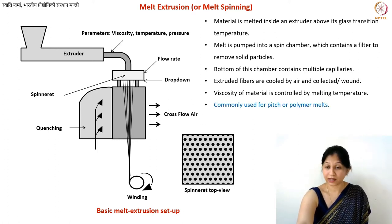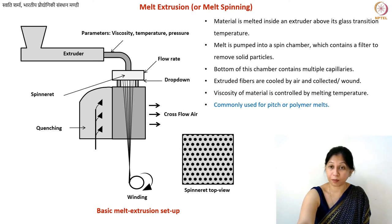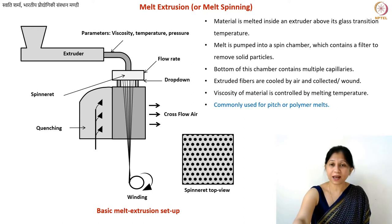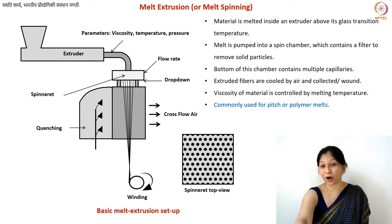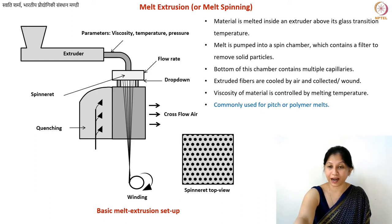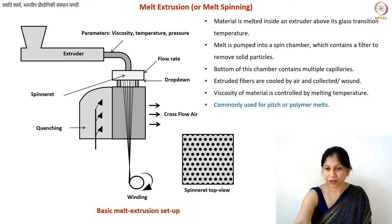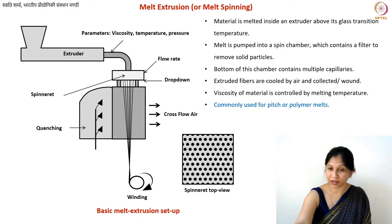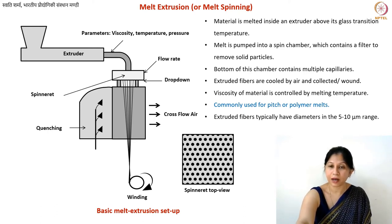Melt spinning is commonly used for pitch but also for melted polymers. The term 'melted' is not always correct because polymers can also just be solutions that are liquid at room temperature — those are not melted solids. For polymer solutions, you would do electrospinning rather than melt extrusion. Melt extrusion is specifically for melted polymers.